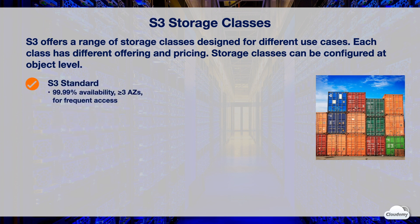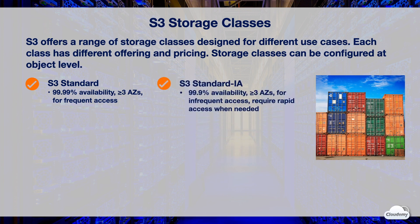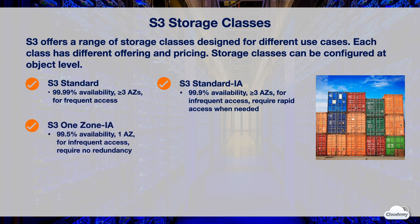S3 Standard class is designed for 99.99% availability. Data is stored across at least three availability zones. S3 Standard is recommended for frequently accessed data. S3 Standard Infrequent Access class is designed for 99.9% availability. Data is stored across at least three AZs. It's recommended for infrequently accessed data that requires rapid access when needed.